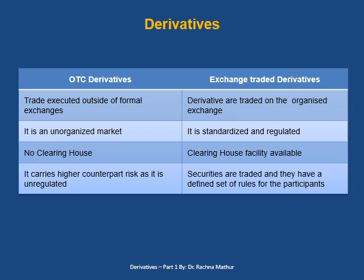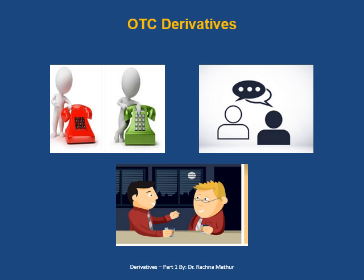Derivatives are traded both on exchanges and over-the-counter. Over-the-counter derivatives are an unorganized market — they have no clearinghouse and are traded outside formal exchanges without the supervision of an exchange regulator. Therefore they carry counterparty risk. In over-the-counter derivatives, the agreement is done on a one-to-one basis via emails or phones, and no exchange or clearinghouse is involved in that contract.